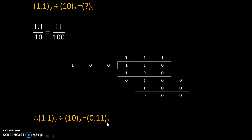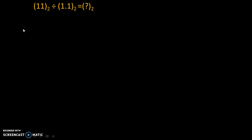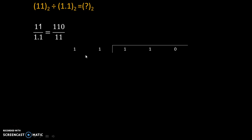Now let's look at the final case, Case 3, in which the divisor is a fractional number and the dividend is a whole number. The example is 11 base 2 divided by 1.1 base 2. We write that in fraction form, then shift the fractional point one position to the right, so the divisor becomes the whole number 11 and the dividend becomes 110. We then divide these values.